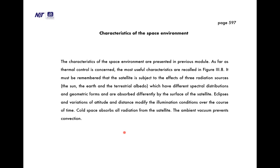The characteristics of the space environment were presented in the previous module. Regarding thermal control, the satellite is subject to the effects of three radiation sources with different spectral distributions and geometric forms, which are absorbed differently by the satellite surface. Eclipses and variations of attitude and distance modify illumination conditions over time. Cold space absorbs all radiation from the satellite, and the ambient vacuum prevents convection.